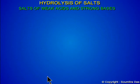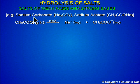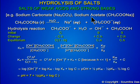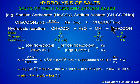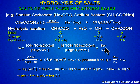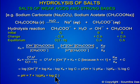Salts of weak acid and strong base, for example sodium carbonate, sodium acetate, etc. The method of calculation is the same as the previous one. Only here the acetate ion, which comes from a weak acid, hydrolyzes, with Kh equal to Kw divided by Ka, and pH equal to 7 plus half pKa plus log C.